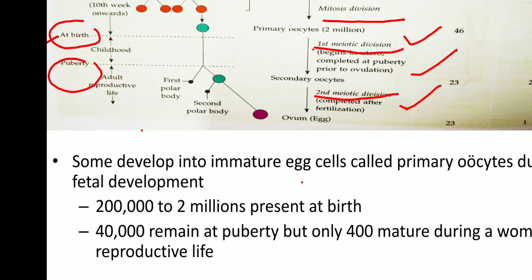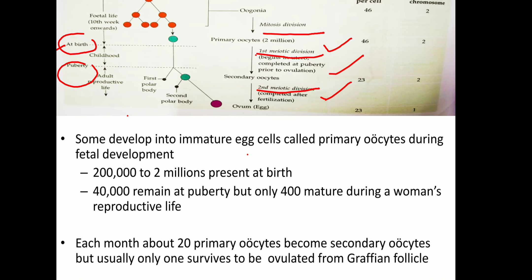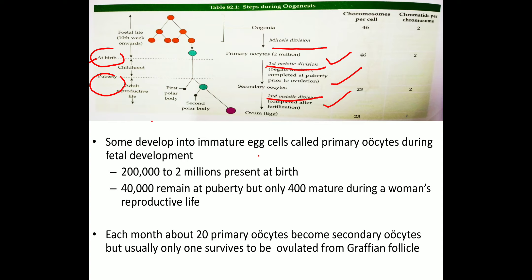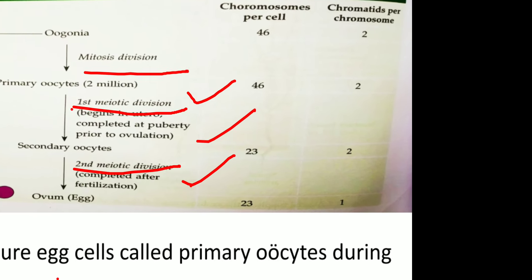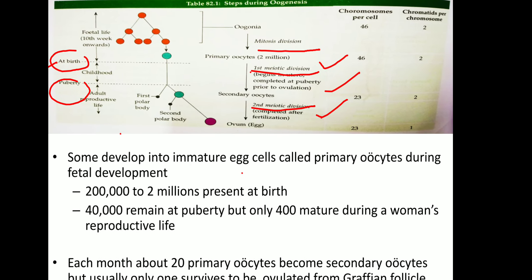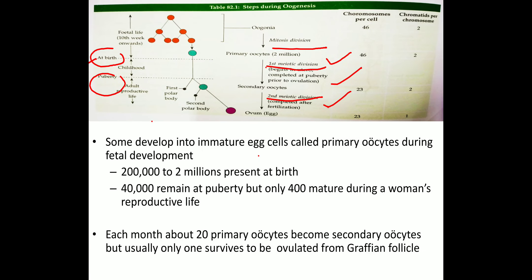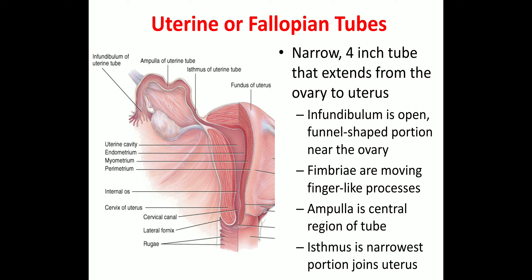Also note the chromosome counts during oogenesis: chromosomes per cell are 46 in fetal life and at birth, then 23 at puberty onwards. Chromatids per chromosome are 2 during fetal life and at birth, then 2 at puberty, reducing to 1 when the cell becomes an ovum.